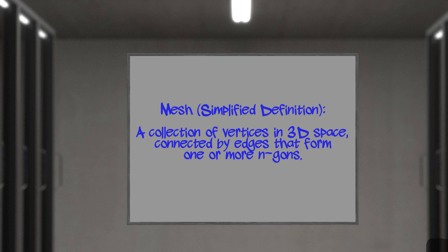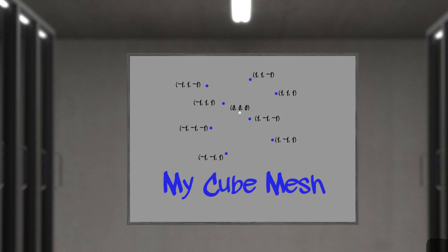And unless you're a 3DO developer, those ngons will probably be triangles. Let's build that theoretical mesh as a set of eight vertices centered around the origin, and with a length of two units per edge.